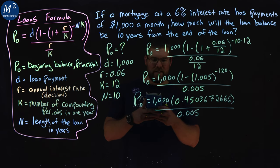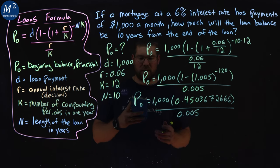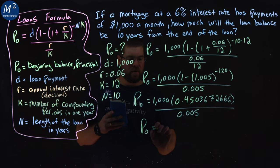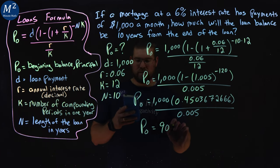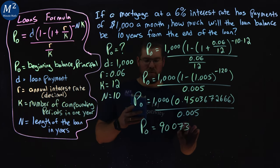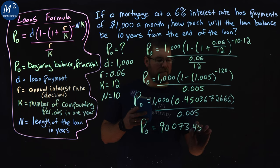0.4503672666 divided by 0.005, is a P sub 0 of 90,073.45 rounded.